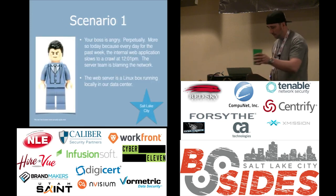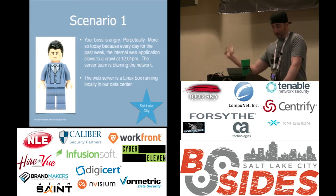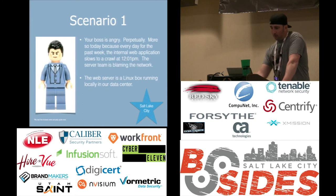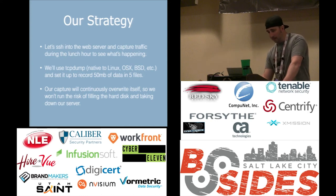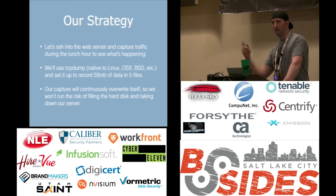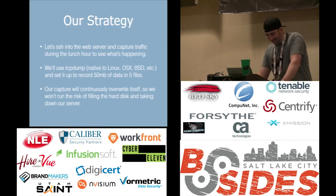Scenario one: the boss is angry because the internal web application slows to a crawl every day at 12:01 PM. The server team is blaming the network — server team has never said 'I don't know, it's got to be the network,' right? The web server is a Linux box running locally in our data center on an internal application. Strategy: SSH into the web server, capture traffic during the lunch hour slowdown using TCPDump. Key point: we'll set it up to record 50 MB of data in five files with a ring buffer, so we don't flood the disk and tip over the server.